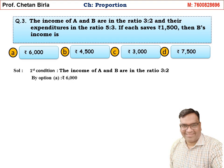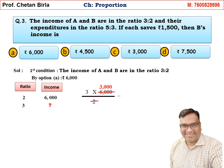Going by option method: if B's income is 6000 rupees (B's ratio is 2), then by cross multiplication, A's income = 3 × 6000 / 2 = 9000. So A's income is 9000 and B's income is 6000.